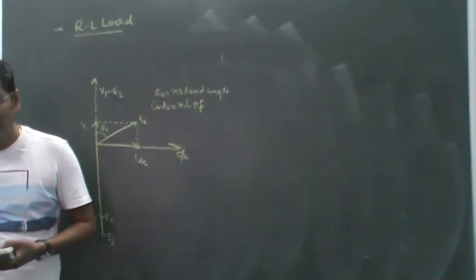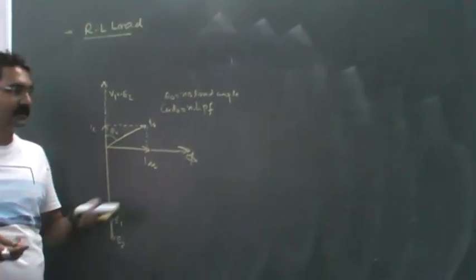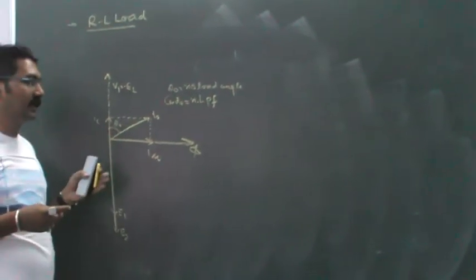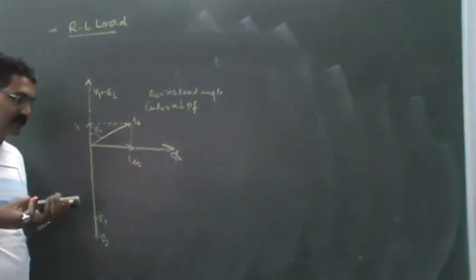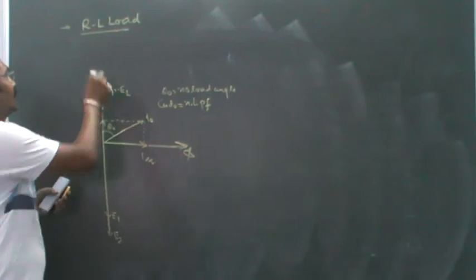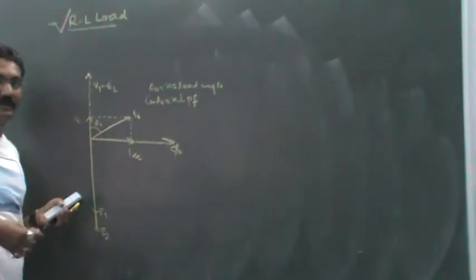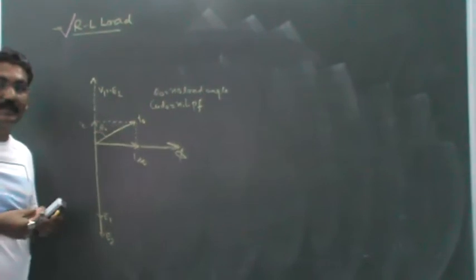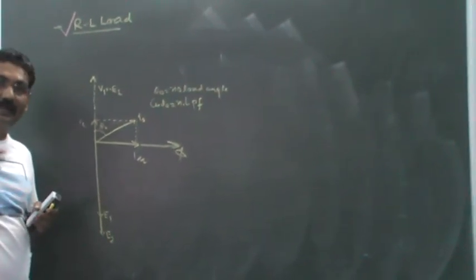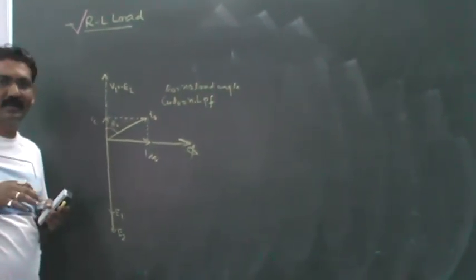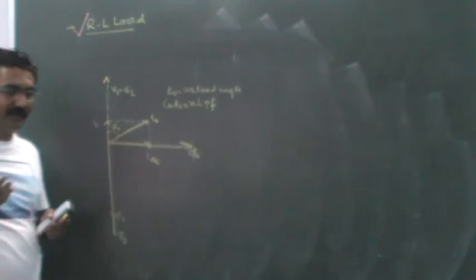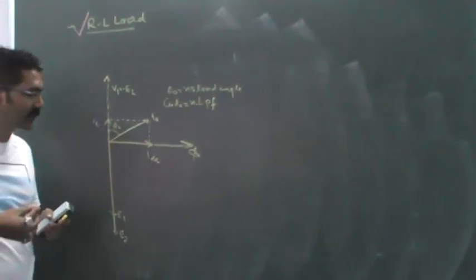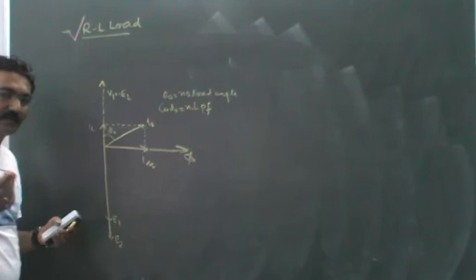Now let us start with the loading condition on secondary. As you load the secondary by some load, I am taking the nature of the load as inductive—that is RL load. In that case, the load current will lag from the load voltage by some angle, which is decided by the power factor of the load. Let this angle be theta_2.